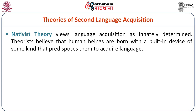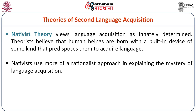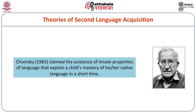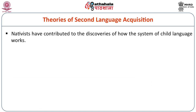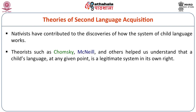Another theory is the nativist theory, which views language acquisition as innately determined. Theorists believe that human beings are born with a built-in device of some kind that predisposes them to acquire language. Nativists use a rationalist approach in explaining the mystery of language acquisition. Chomsky in 1965 claimed the existence of innate properties of language that explain a child's mastery of the native language in a very short time. Nativists, including Chomsky, McNeil, and others, helped us understand that a child's language at any given point is a legitimate system in its own right.